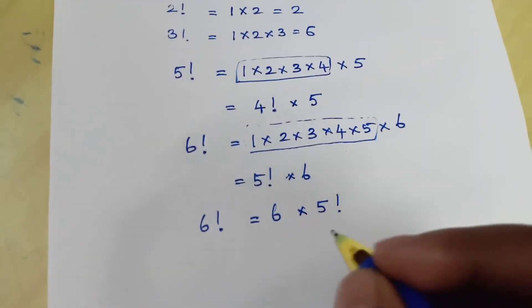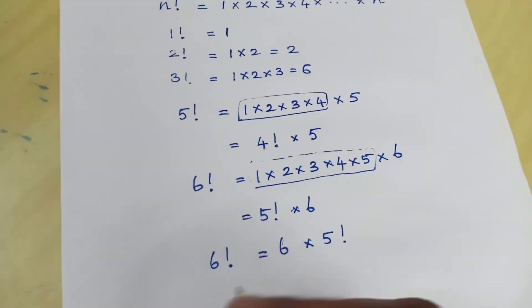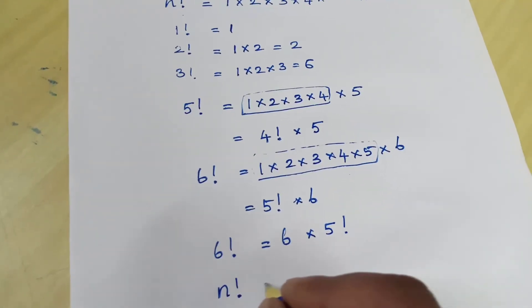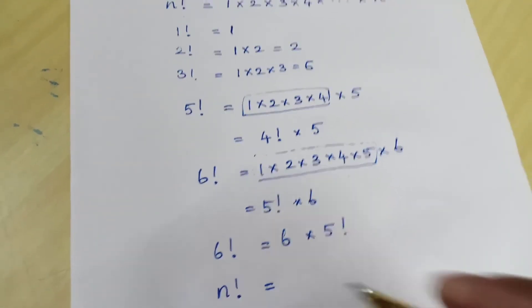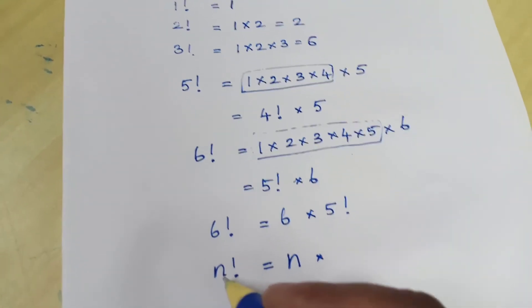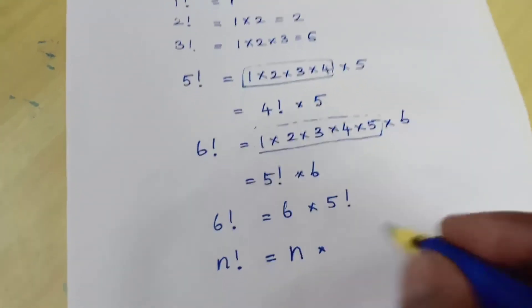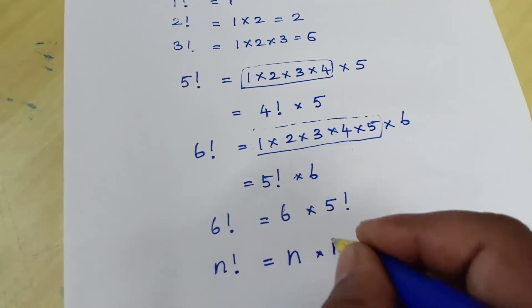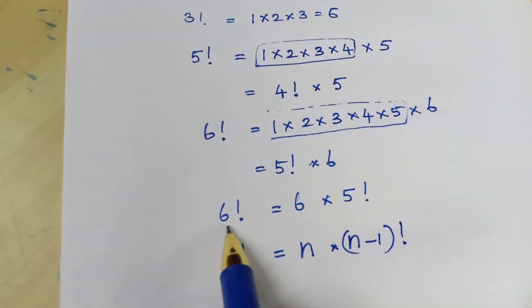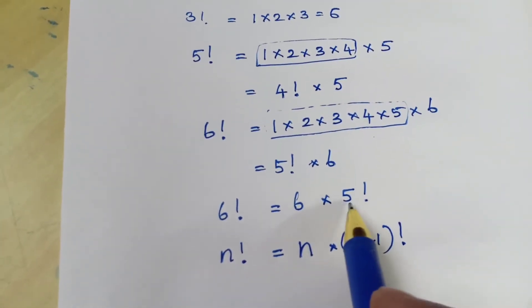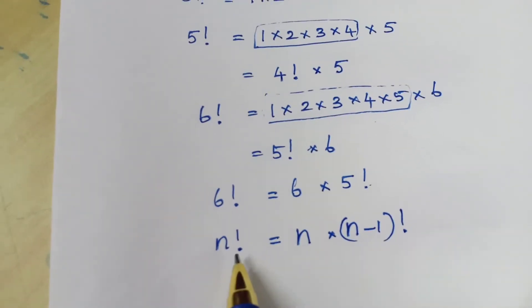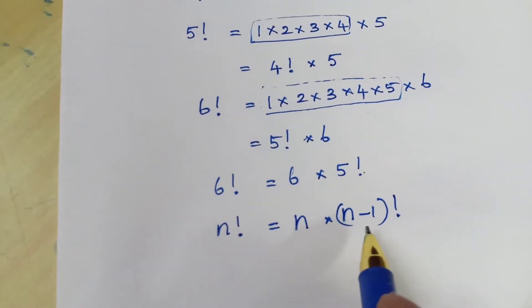In the same way we can write in a general form: n factorial can be written as n × (n−1) factorial. 6 factorial means 6 × (6−1), that is 5 factorial. So n factorial is equal to n × (n−1) factorial.